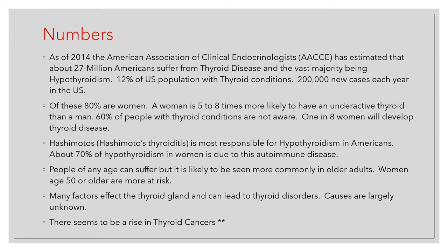I've purposely made these slides a little text intensive so you can pause and read through them. In 2014, the American Association of Clinical Endocrinologists estimated about 27 million Americans suffer from thyroid disorders, and it's probably much more now — six to seven years later. Approximately 12% of the US population has thyroid conditions, with 200,000 new cases each year, and 80% of those affected are women. Unfortunately, 60% of people with thyroid conditions are unaware of it, and it goes undiagnosed for many years. Hashimoto's, an autoimmune disease of the thyroid, is responsible for much of the hypothyroidism in this country, whereas in sub-Saharan Africa, iodine deficiency is usually the number one cause.